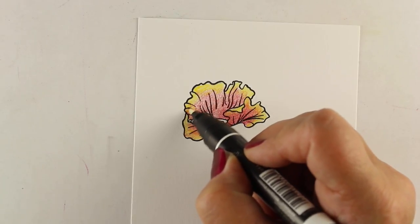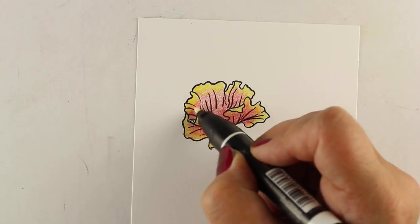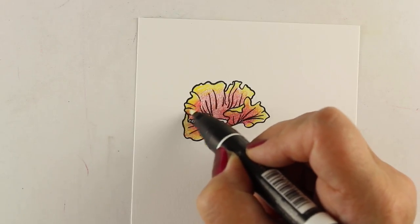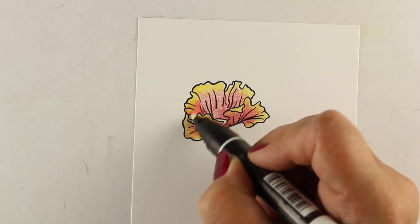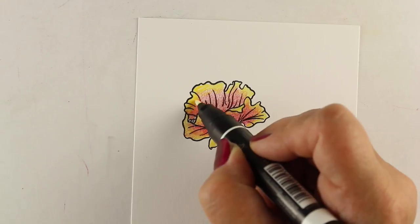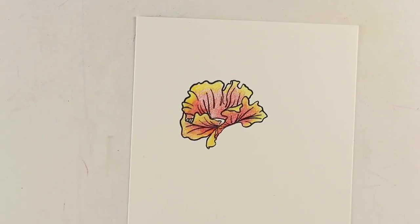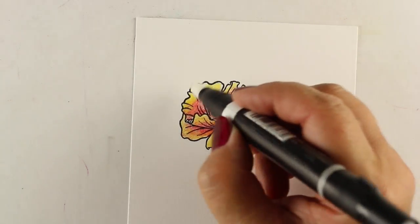I'm going to try both out and see how they work. This says it's an alcohol solution in here. I've seen some people use their colorless blender with their Prisma colors, but of course that wrecks your nib.